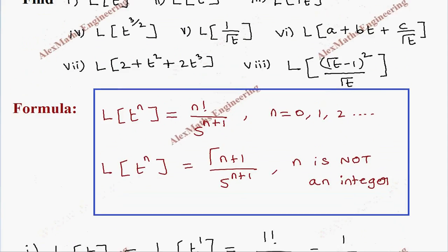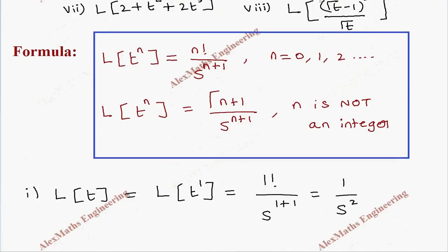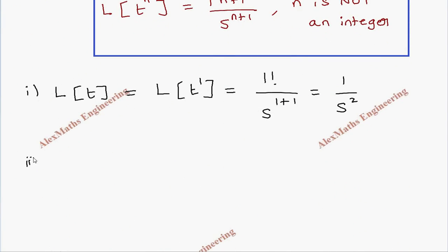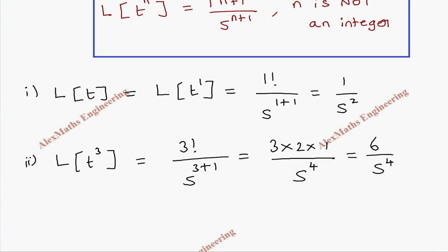Coming to the second problem: Laplace transform of t cubed. Once again it is an integer, so the value of n is 3. By the formula, it is 3 factorial by s to the power 3 plus 1. Three factorial is 3 times 2 times 1, all divided by s to the power 4, which gives 6 by s to the power 4.